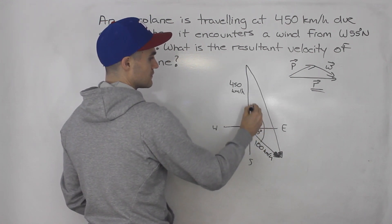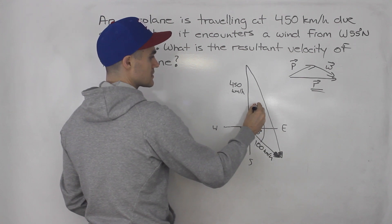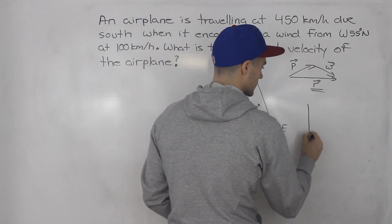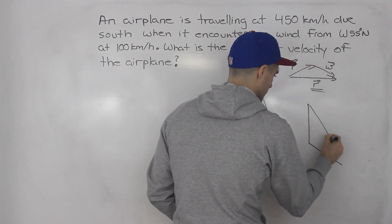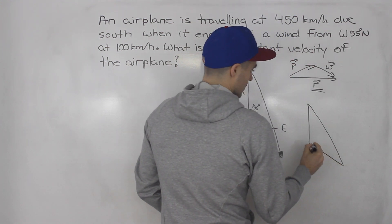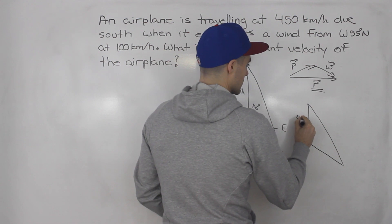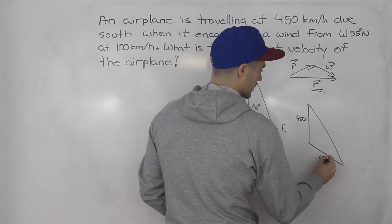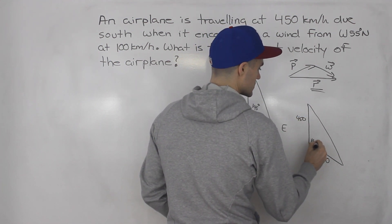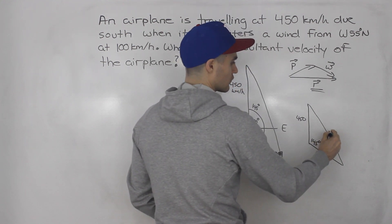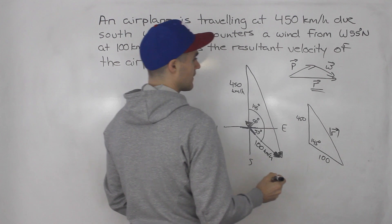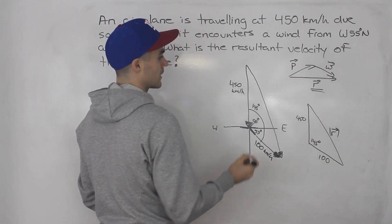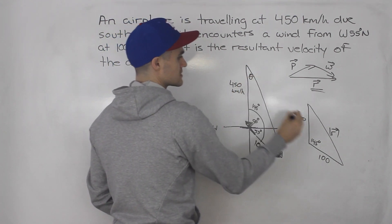So notice that we just got a triangle now. We can add these two angles, so 90 plus 55, that's 145 degrees. Let's actually draw this triangle down here again, a little nicer. So this is 450, this is 100, and then this is 145 degrees, right? And we're looking for this resultant, so that's like the speed of the resultant, and then the direction we're going to solve for this theta here.